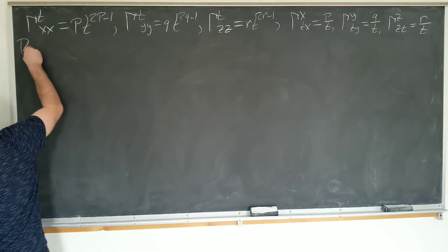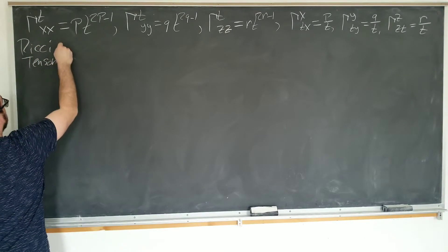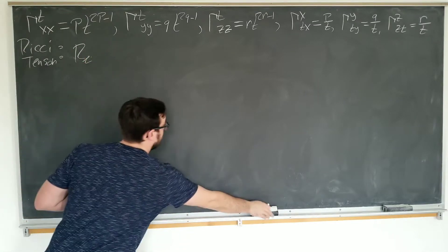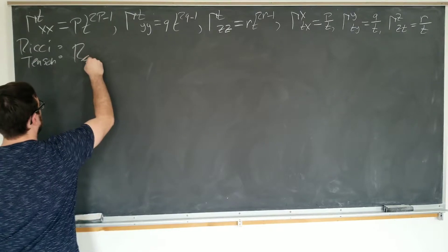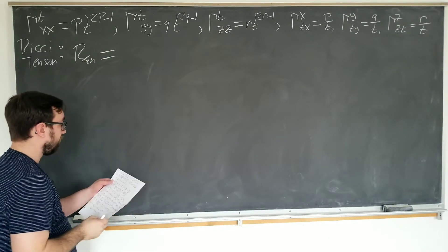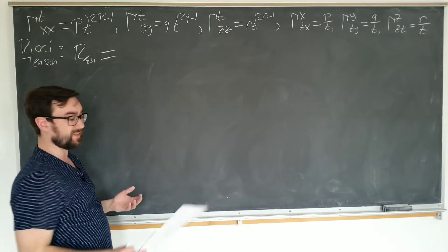So we have the Ricci tensor. Its definition is R_mu_nu. So it's just a matrix, right? R_mu_nu. Only two indices. Can't be that bad, right? Well, since it's made out of the Christoffel symbols, we have to add more indices to sum them over.